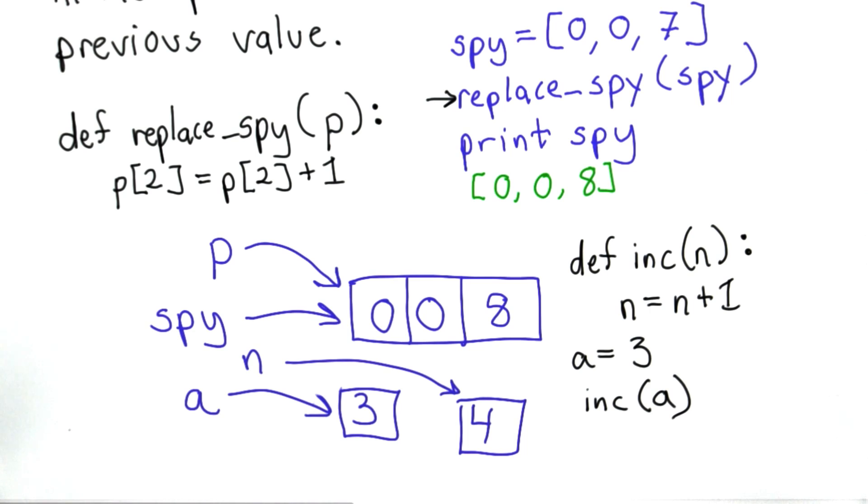If we could, everywhere the value 3 existed before, well, now it would mean 4. That would be pretty confusing.